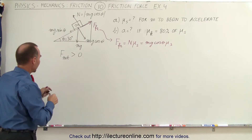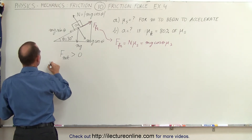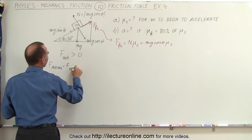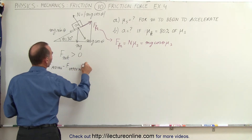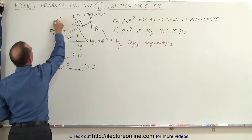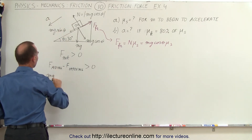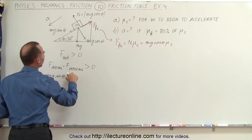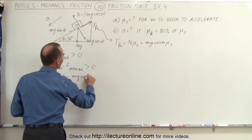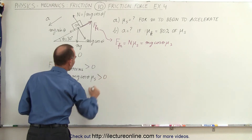Now that we have all the forces, we can say that the net force — all forces aiding the acceleration minus all forces opposing the acceleration — must be greater than zero. Assuming acceleration is down the incline, that gives us mg sine of theta minus mg cosine of theta times mu sub s, and that must be greater than zero.